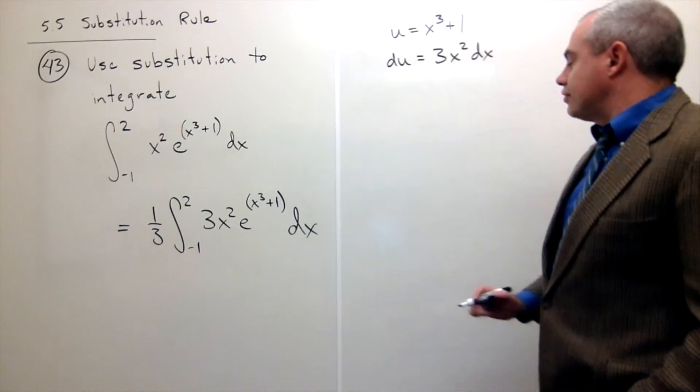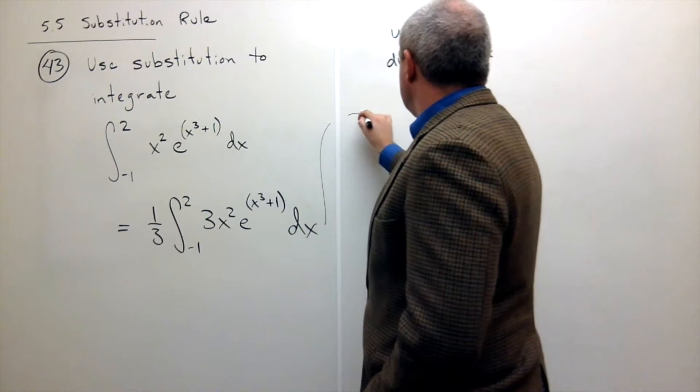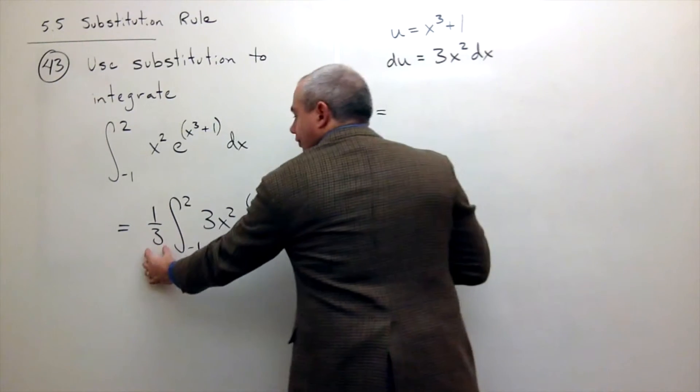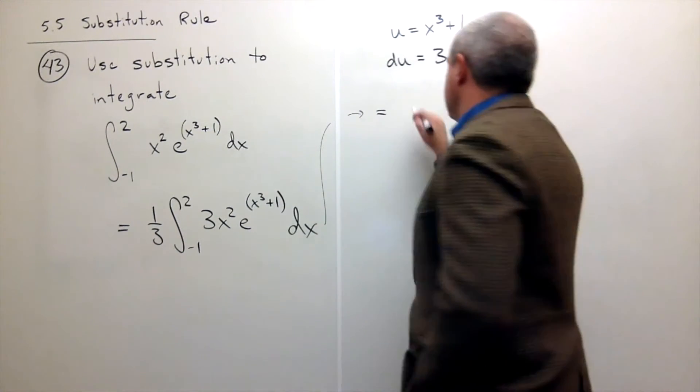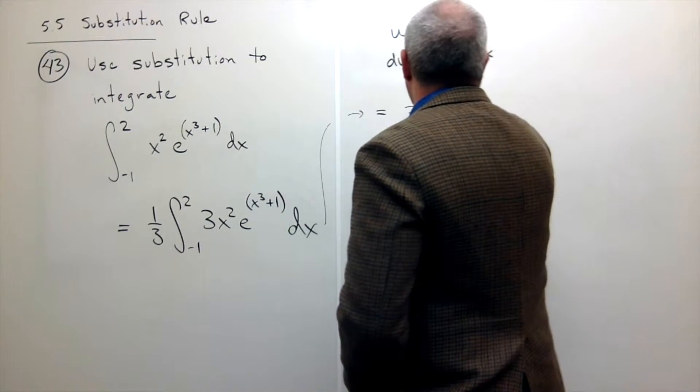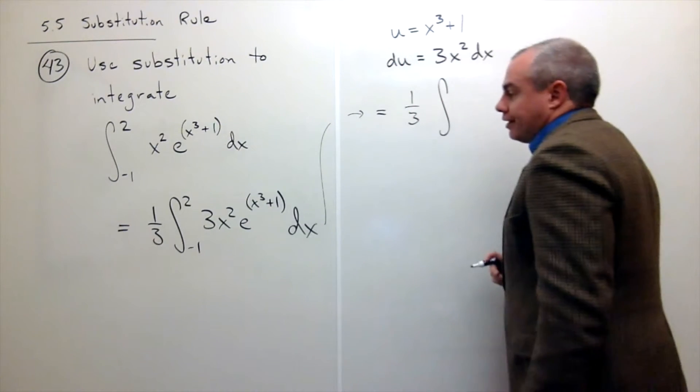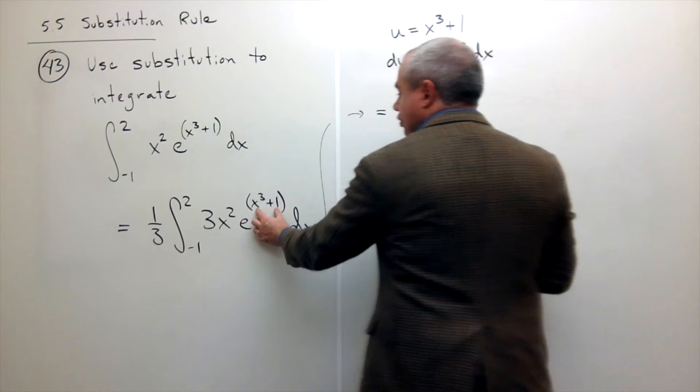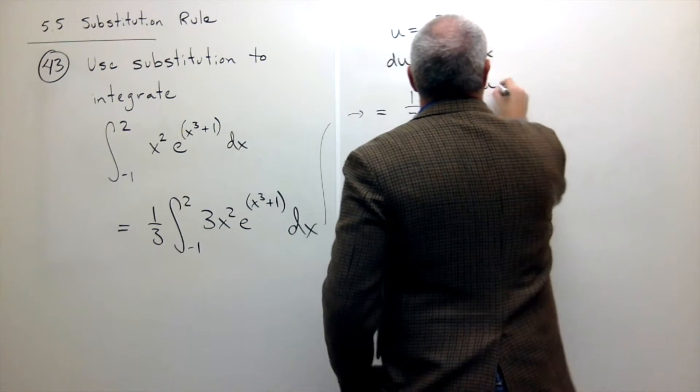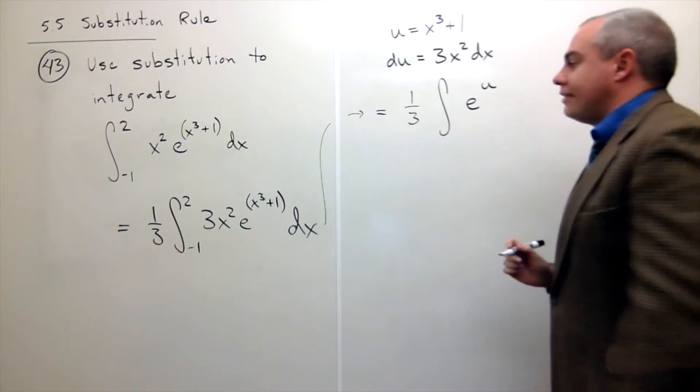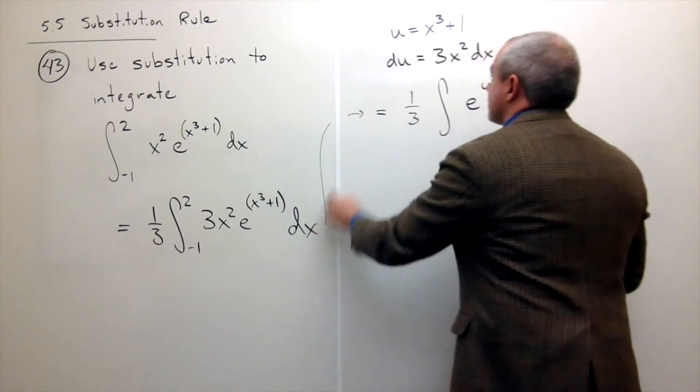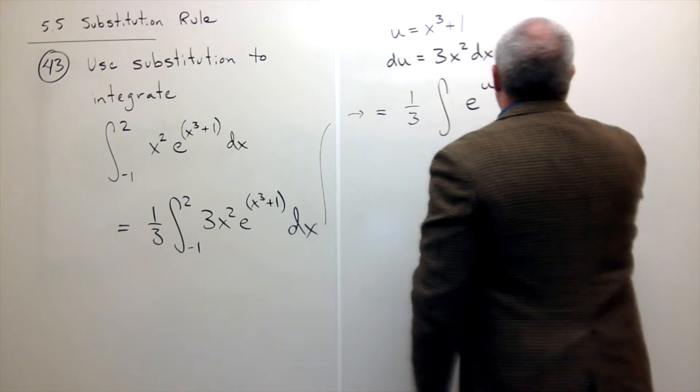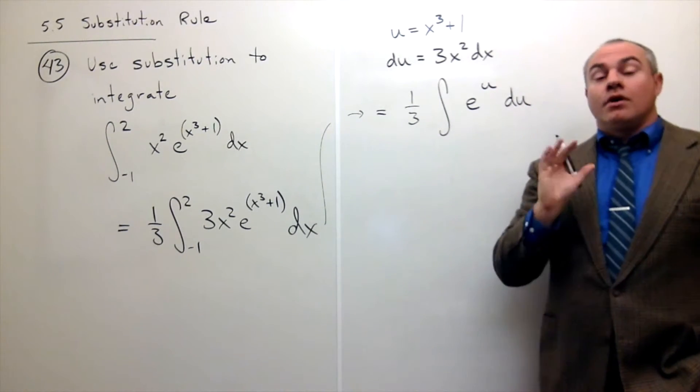Now I'm ready to make my substitution. So let's move this right here. I'm going to make my substitution. I still have that 1 third sitting on the outside of the integral. So let's write that in first. And now I have integral of e to the u. This is e. x cubed plus 1 is u. So I have e to the u power. And then 3x squared dx. 3x squared dx. All of that is du. So I just write in du.